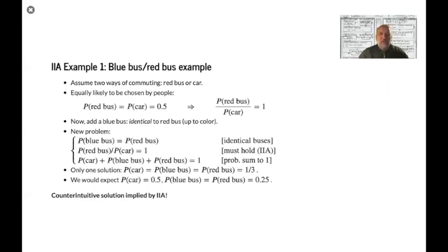So here's a very clear example, very classic example called the red bus, blue bus example. It's due to I think it's actually due to Debreu, but some people cite McFadden for it. I think both deserve the highest honor. So let's just honor them both. Assume two ways of commuting, red bus or car. So you can choose between these two different ways of getting to work. And they're equally likely, people are close to be indifferent. So the probability here in the simple stylized example is that they're both equal to one half.